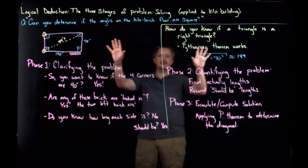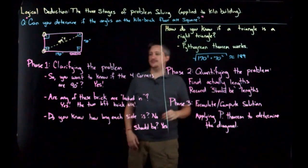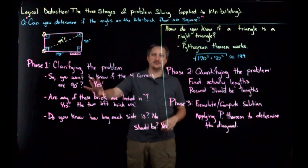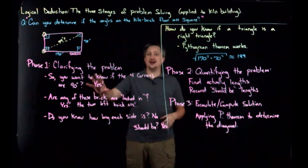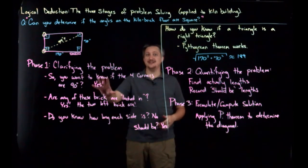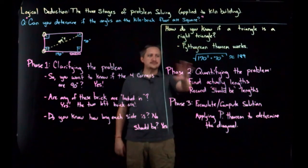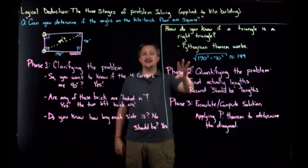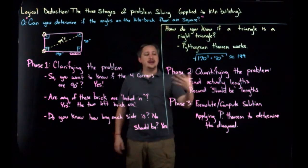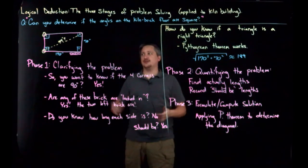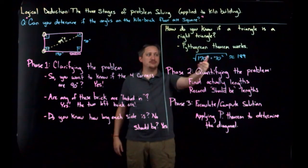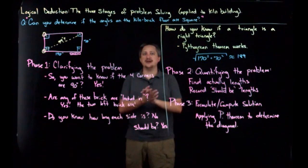All right. So, this is the logical deduction as applied to the kiln problem that I had. And just to clarify, phase one, phase two, phase three. Phase one, you want to clarify the problem. In practice, more often than not, this finds all kinds of things that you maybe weren't expecting to need to know. Phase two is applying numbers and what you need to the situation, quantifying it, turning it into the mathematical language. Phase three is actually formulating and computing an actual answer, coming up with the 189 inch diagonal or whatever the number actually is. That is that.